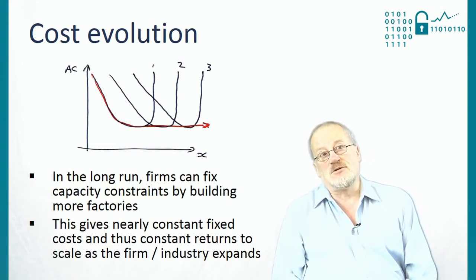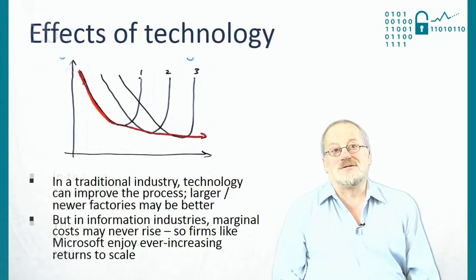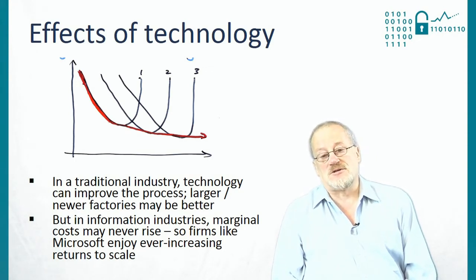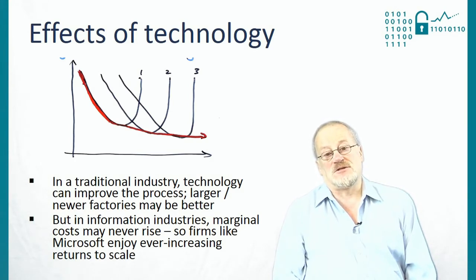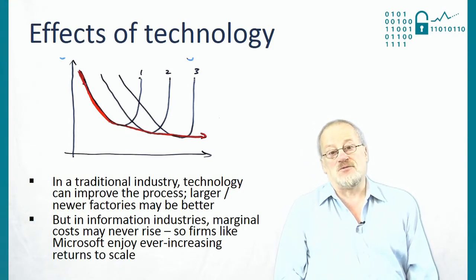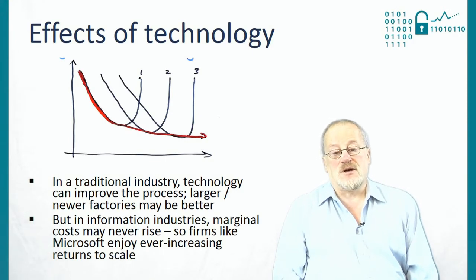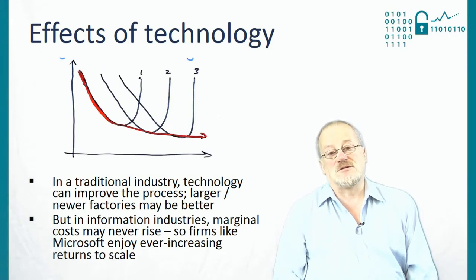When you look at information goods and services, technology has a very different effect. The marginal cost to Microsoft of copying one more instance of Windows or Office is very, very small. Once they have paid the huge fixed costs of writing the product, their average costs keep going down. This means marginal costs may never rise, and information goods and services firms can achieve ever-increasing returns to scale.